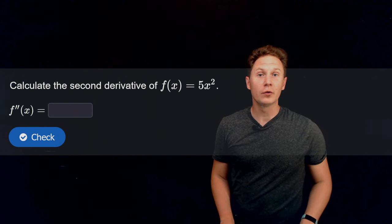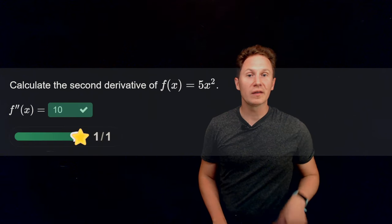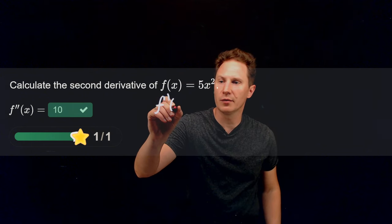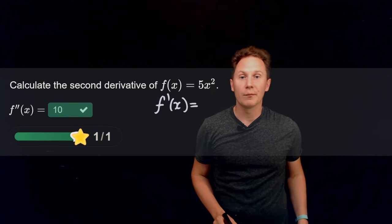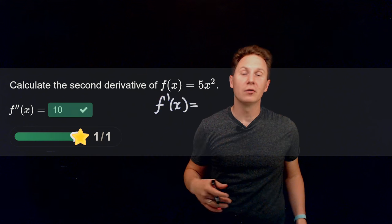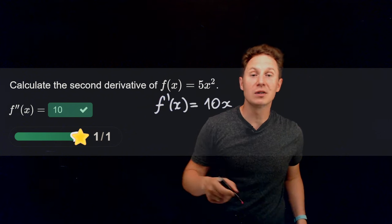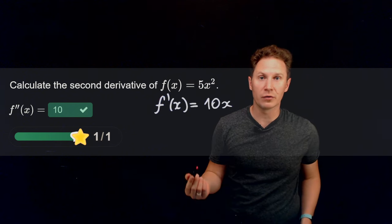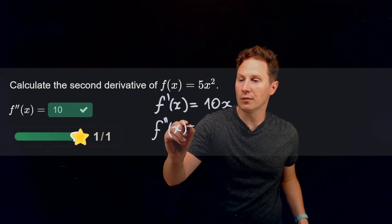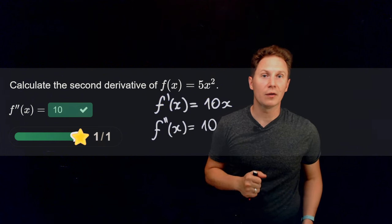Calculate the second derivative of f(x) = 5x². The answer is 10. The first derivative of 5x² is 5·(2x) = 10x, recalling that the derivative of x² is 2x. The graph of 10x is already a straight line, and its derivative is simply the slope, which is the constant 10.